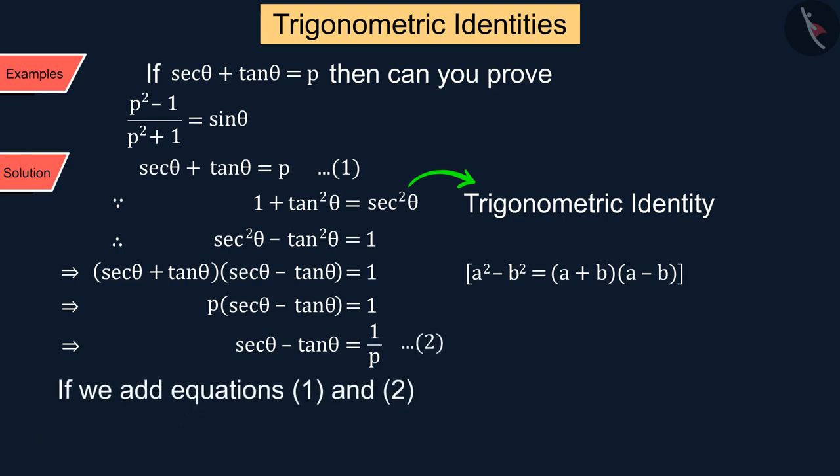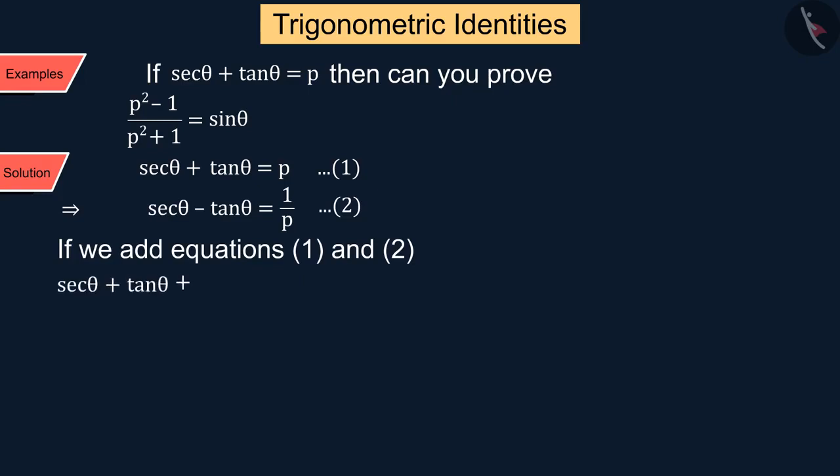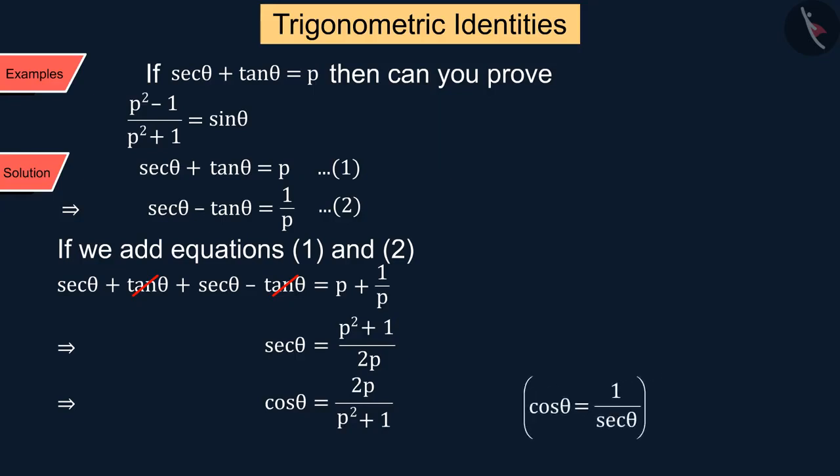Now if we add equations 1 and 2, we get sec θ = (p²+1)/2p, which we can also write in this way. Since we know that cos θ equals 1/sec θ.